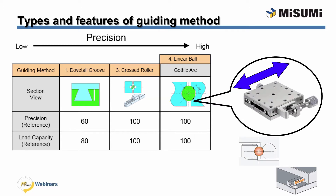With the linear ball guide, the linear balls are contained in two rails with a gothic arc groove, which is a combined curve of two arcs. Stable load endurance is achieved by four contact points and equal distribution of motion, providing increased durability. This type of guide is suitable for high precision and heavy load stages.